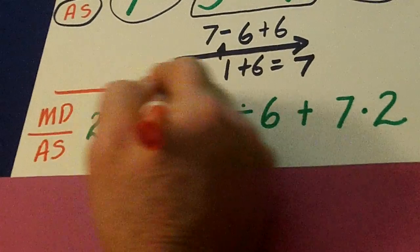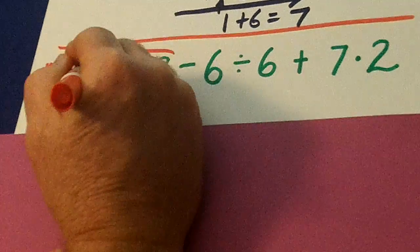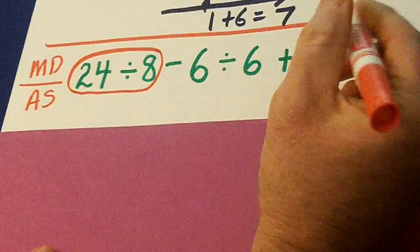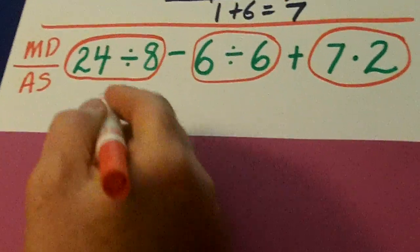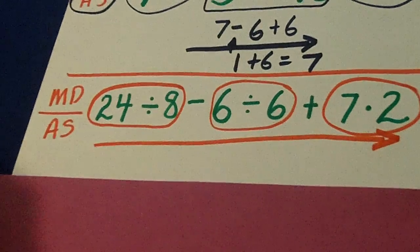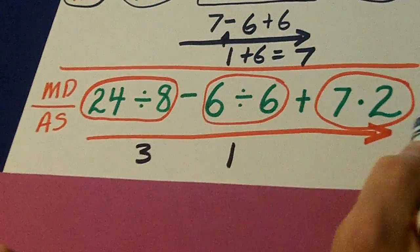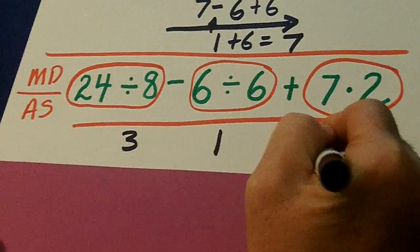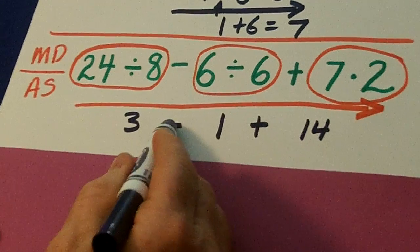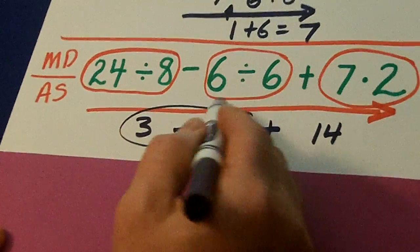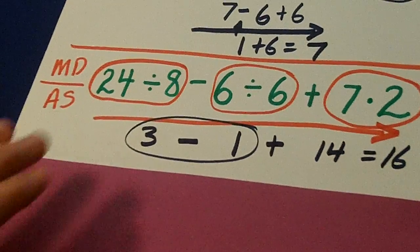Look at this one. All of a sudden, it gets kind of tricky here. Now we're going to do any multiplication and divisions first. There's three of them. As we go from left to right, we do 24 divided by 8 is 3. 6 divided by 6 is 1. 7 times 2 is 14. Then we go subtract and plus. Now we have minus and plus on the same line, so we do the first one. 2 plus 14 is 16.